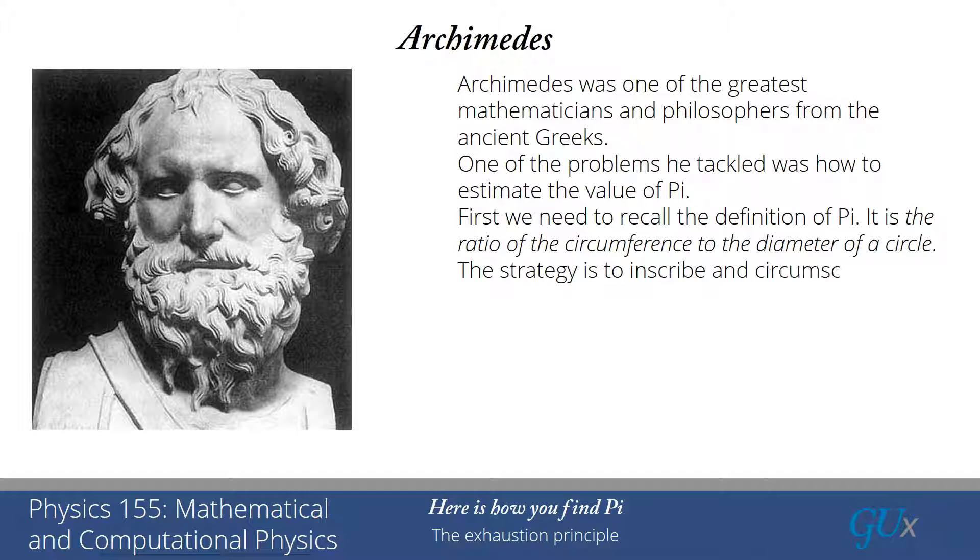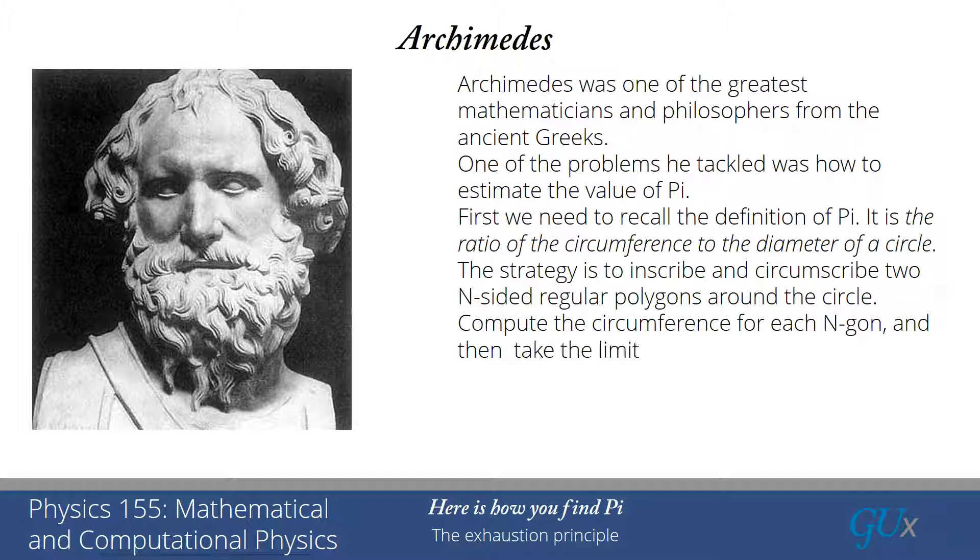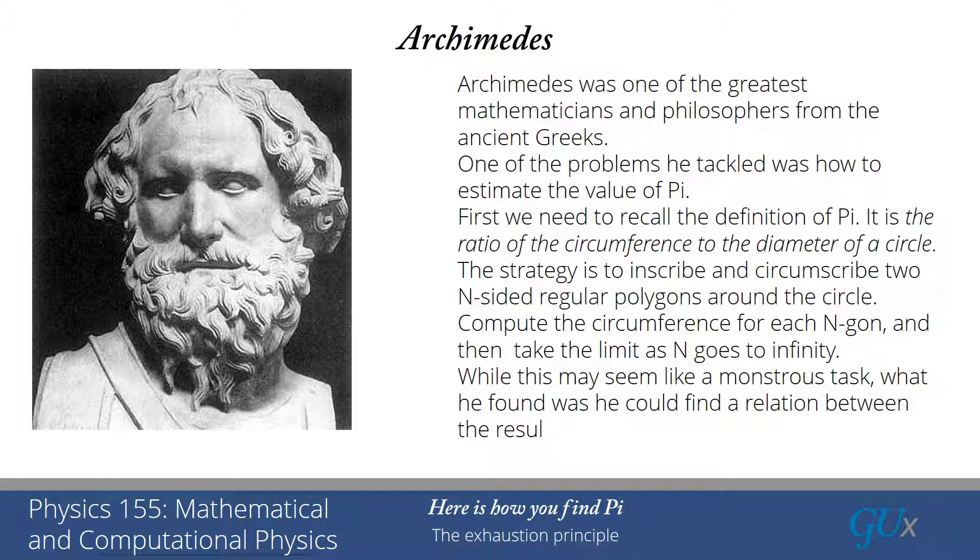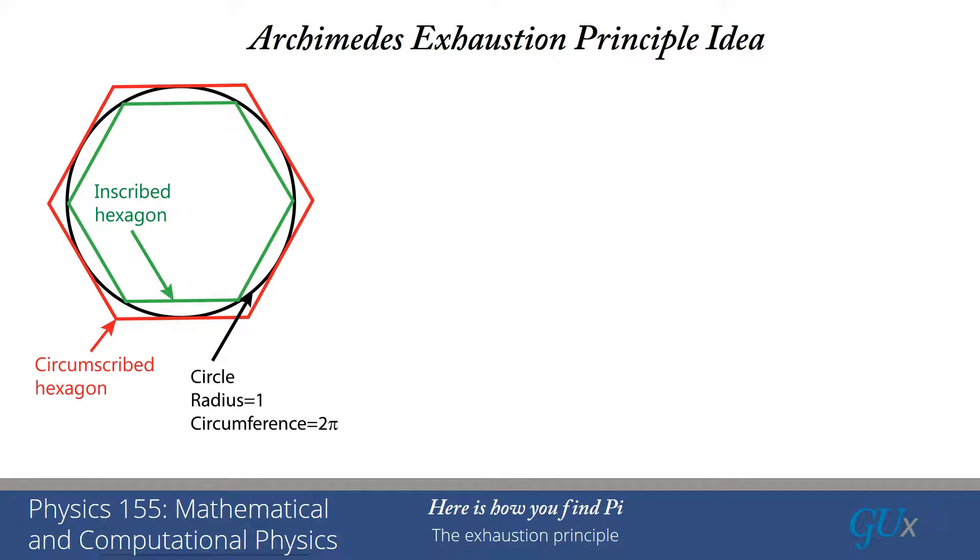The strategy that we're going to use is we're going to inscribe and circumscribe two n-sided regular polygons around the circle. We're going to compute the circumference, or really the perimeter for each n-gon, and then take the limit as n goes to infinity. While this seems like it's an incredibly monstrous task, what Archimedes found was that he could find a relation, a recurrence, between the result for the n-gon and that for the 2n-gon. So if he had the n-gon, he could immediately get the result for the 2n-gon, and then he could just keep proceeding to get the 4n-gon, the 8n-gon, and so on, and go as close to infinity as he could manage to continue doing the calculations.